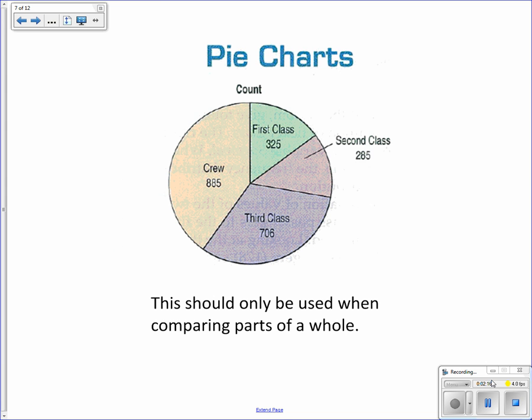Pie charts, I'm sure you're aware of. Now, be careful that you only use a pie chart when the thing you're representing is part of a whole. So in this case, these are all parts of the whole population on the ship. And so it makes sense to do a pie chart here.